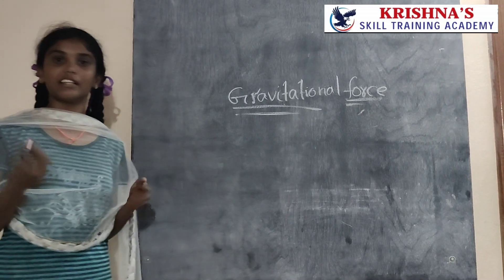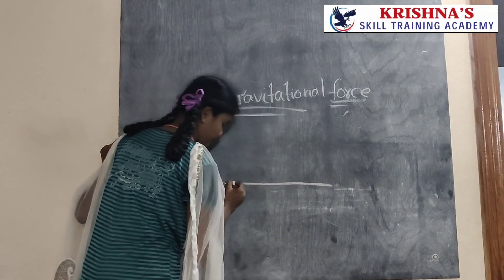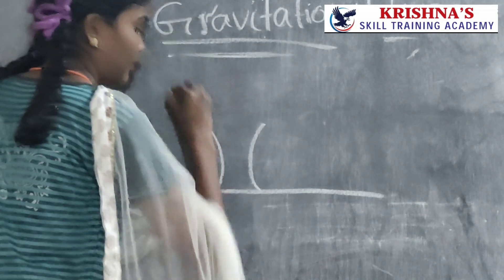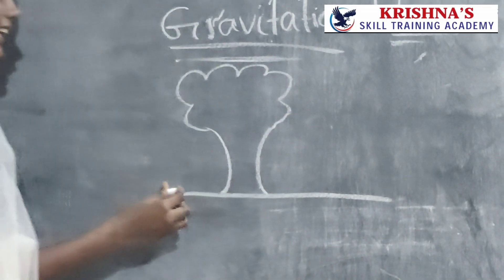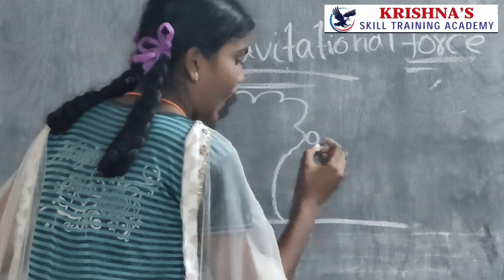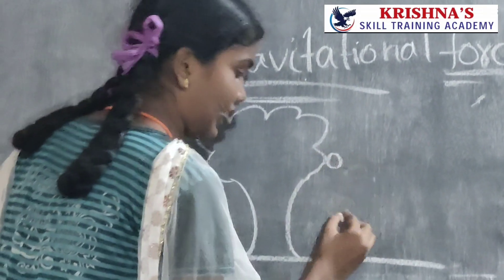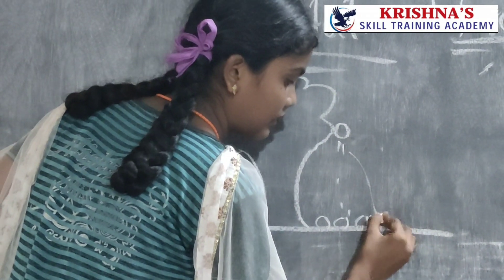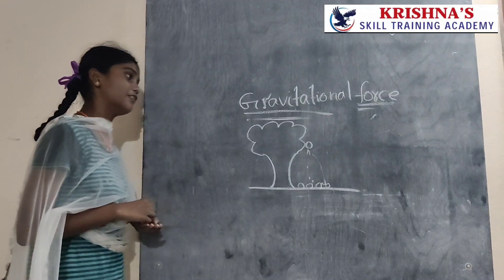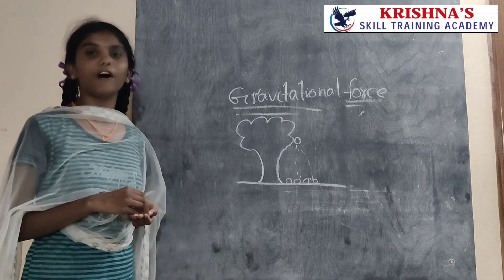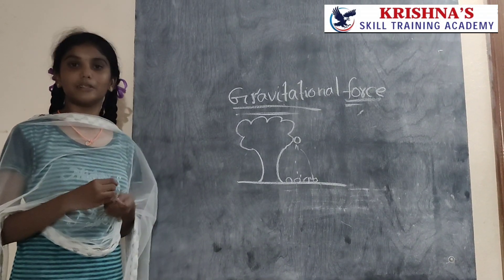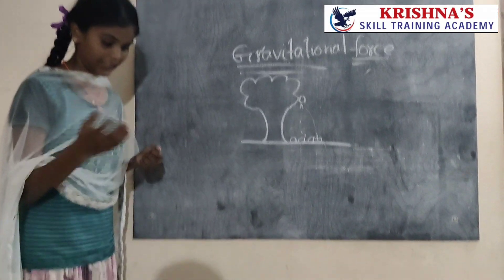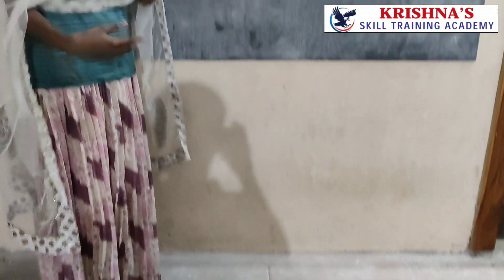Let us know an example for gravitational force. Here is a surface. Let us see a practical example for gravitational force — it is a piece of chalk. I left it, and it fell down. Because of gravitational force, it fell down.